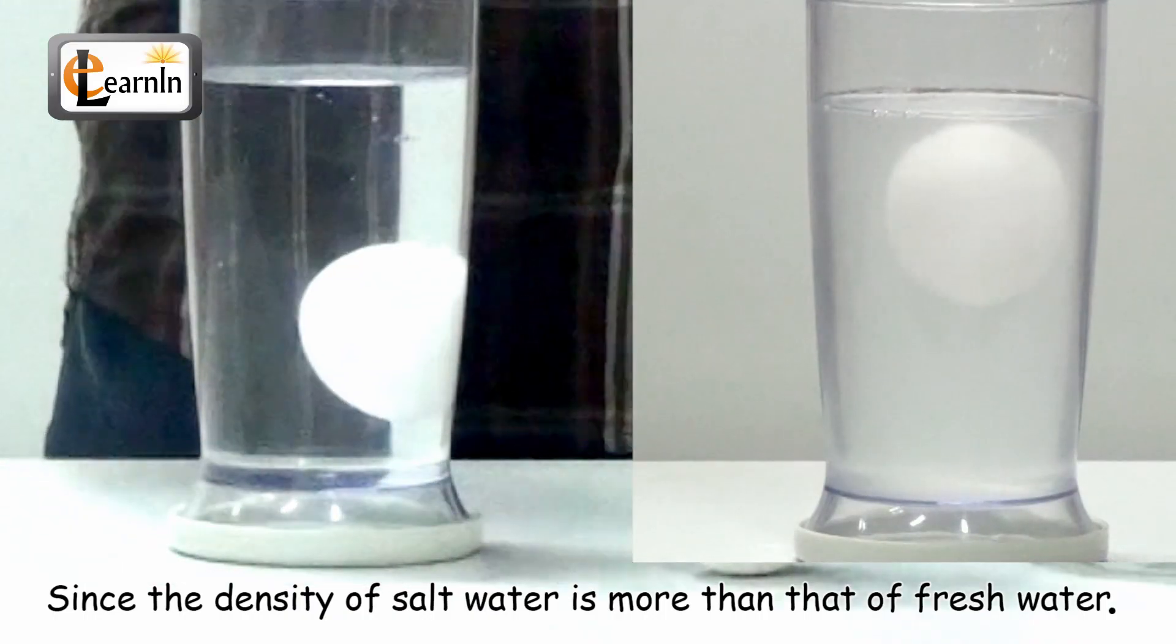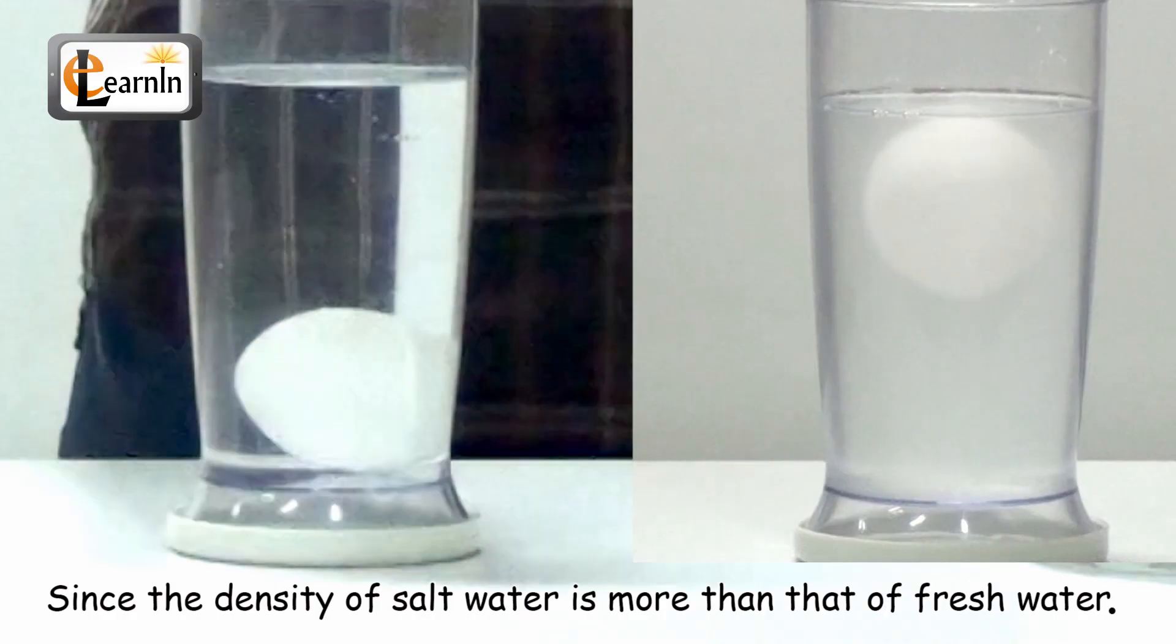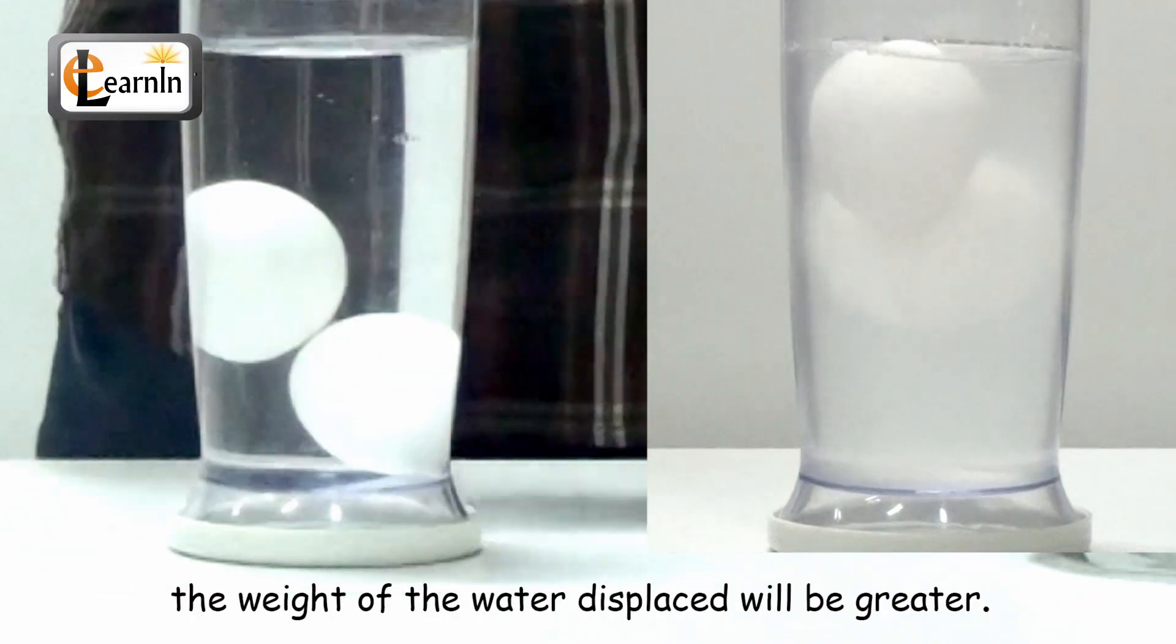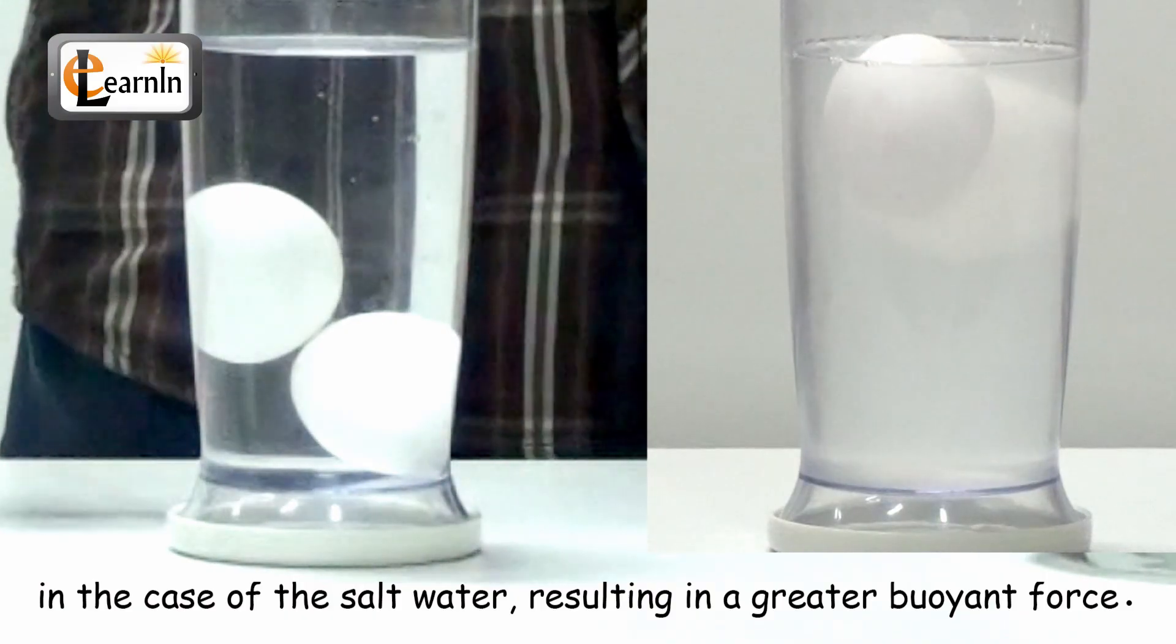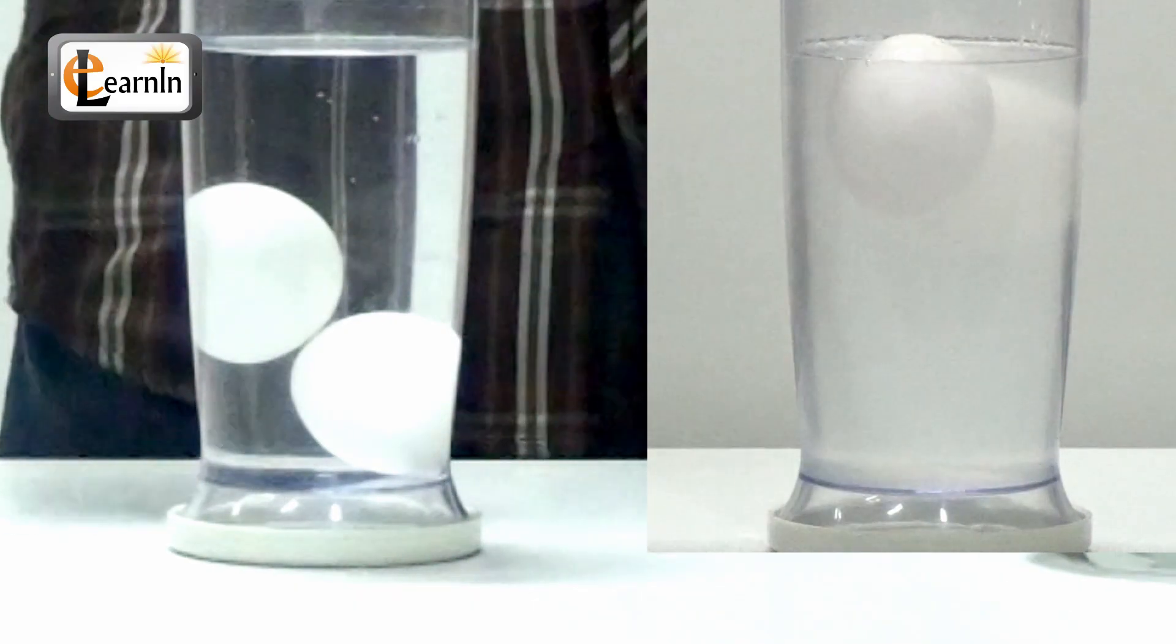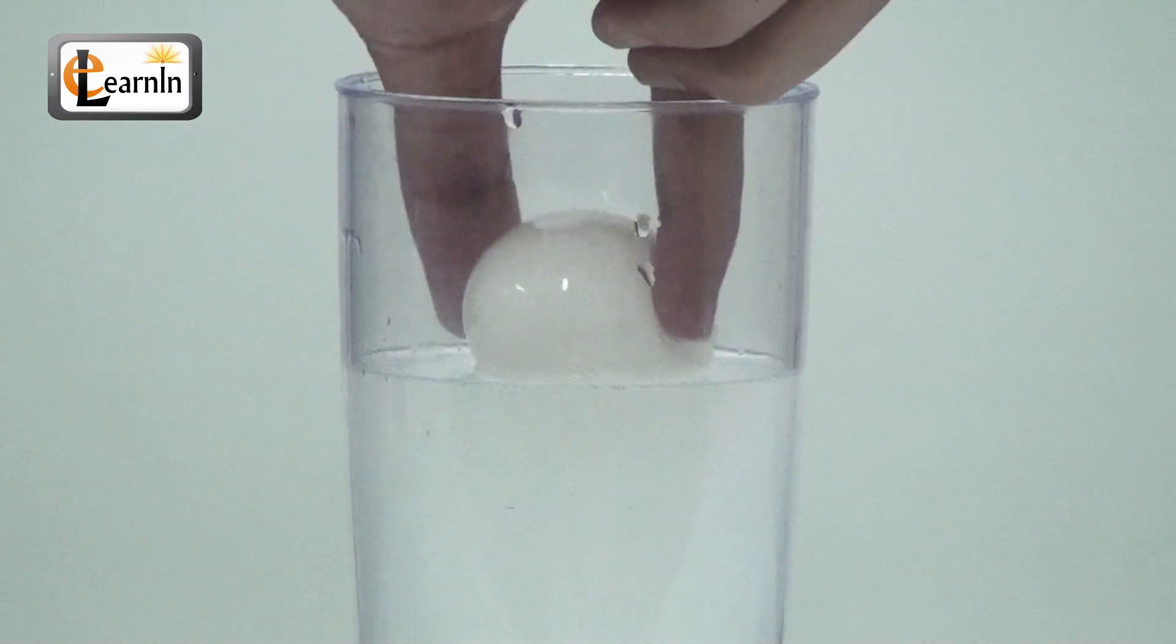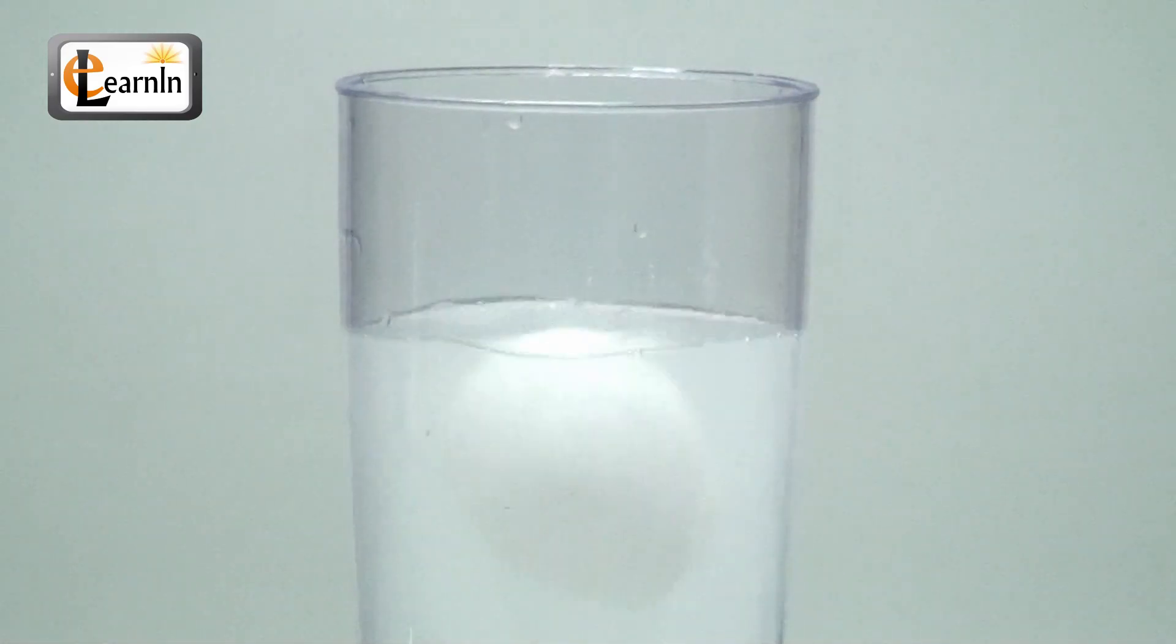Since the density of salt water is more than that of fresh water, the weight of the water displaced will be greater in the case of the salt water, resulting in a greater buoyant force. This greater buoyancy opposes the weight of the egg and hence stops it from sinking.